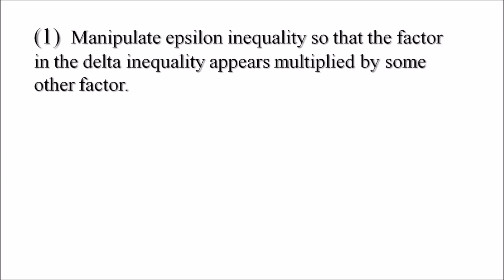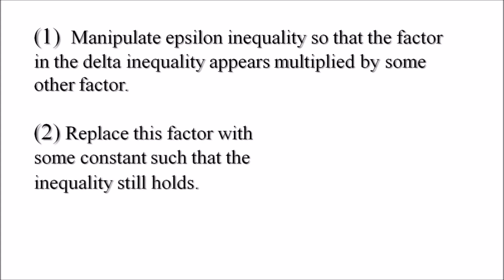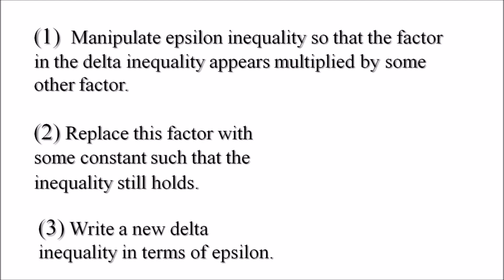The first step is to manipulate the epsilon inequality so that the factor in the delta inequality is multiplied by some factor. The second step is to bound this factor with some constant such that the inequality still holds. The third step is to write a new delta inequality in terms of this epsilon.